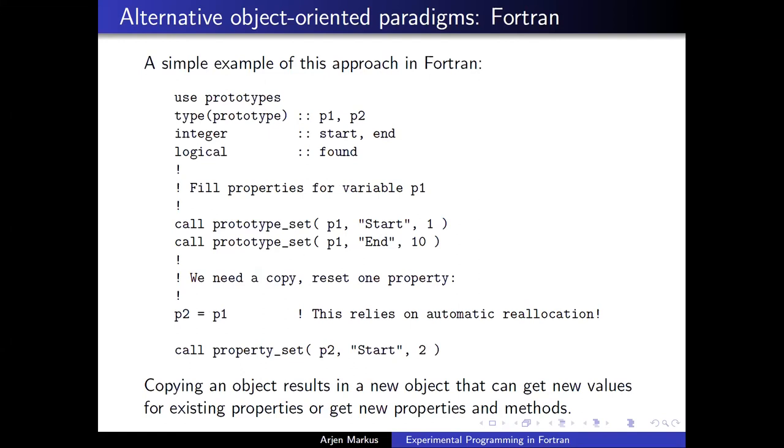A simple example of how you can do that in Fortran is this here. It may not be very elegant, but here you set a property for this particular object. It's called start, and it has the value 1. Here you set another property called end, and it has the value 10. If you then do an assignment, the contents of this particular object is copied into this one. So now this is a clone. This one is a clone of this one. And because it is a true copy and not so much linking into the original object, you can independently change the properties. So the starting point for number 2 might be 2. You can also do this with methods, functions and subroutines. And that's thanks to the procedure pointers.